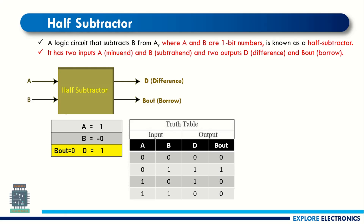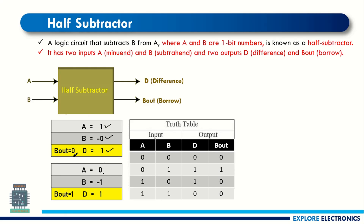Before going to the truth table let us understand how to subtract binary values. If you are subtracting 0 from 1, the difference is 1 and there is no borrow taken, so borrow out is 0. If you have 0 at A and 1 at B, we are subtracting 1 from 0, so we need to take a borrow. Borrow out is 1 and the difference between 0 and 1 is 1.